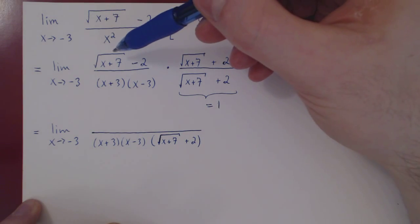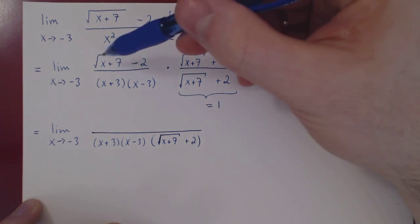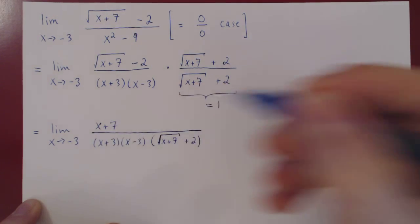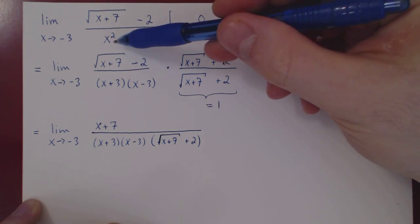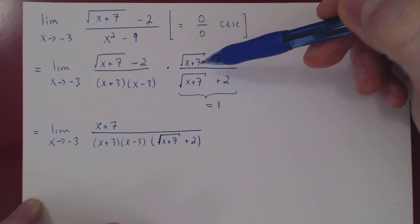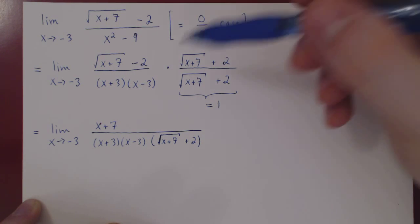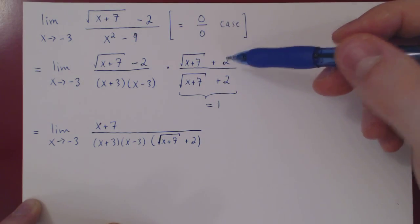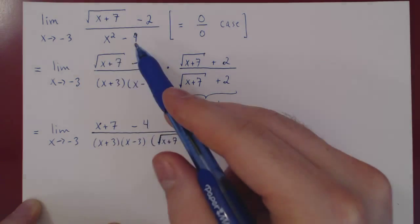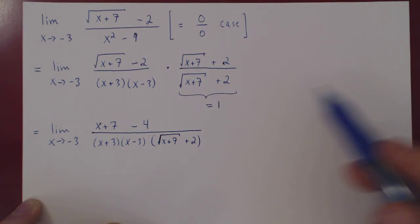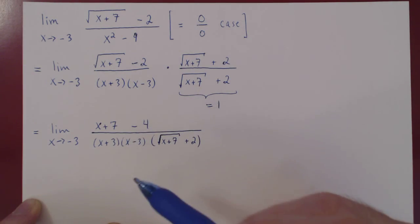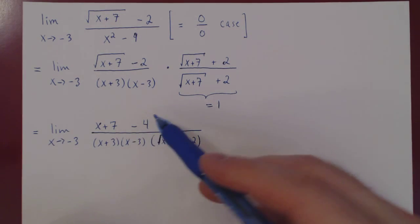Let's see what comes out of this. We'll multiply all the cross terms, so we'll get 4 terms. Root of x plus 7 times itself — the root goes away and we're left with x plus 7. Plus root of x plus 7 times 2, minus 2 times root of x plus 7 — both cancel each other out, giving us 0. And then minus 2 times 2 is minus 4. That's our numerator. We have an obvious simplification: 7 minus 4 is 3.